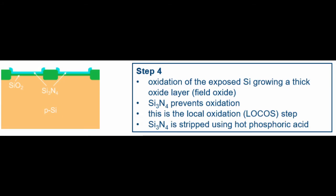Step 4 is to further oxidize the silicon dioxide layer to grow the field oxide. Notice that the silicon nitride prevents further oxidation of silicon — this is due to the density of silicon nitride; it is very dense and prevents silicon dioxide from growing. Then the silicon nitride is stripped using hot phosphoric acid, H₃PO₄. Note that the silicon nitride actually overlaps with some of the field oxide layer, which is undesirable and simply due to diffusion processes.